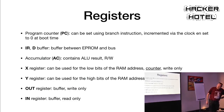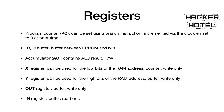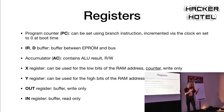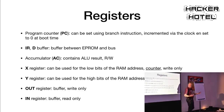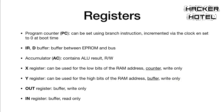We have several registers: the program counter, which can only be set by a branch instruction and automatically increments; an instruction register and D register as buffers between EEPROM and bus; one accumulator holding the ALU result; and X and Y registers used to point at RAM addresses. X is a counter and Y is a buffer. Notably, X and Y are write-only — we can put values in but not read them back out, which keeps the hardware simpler.